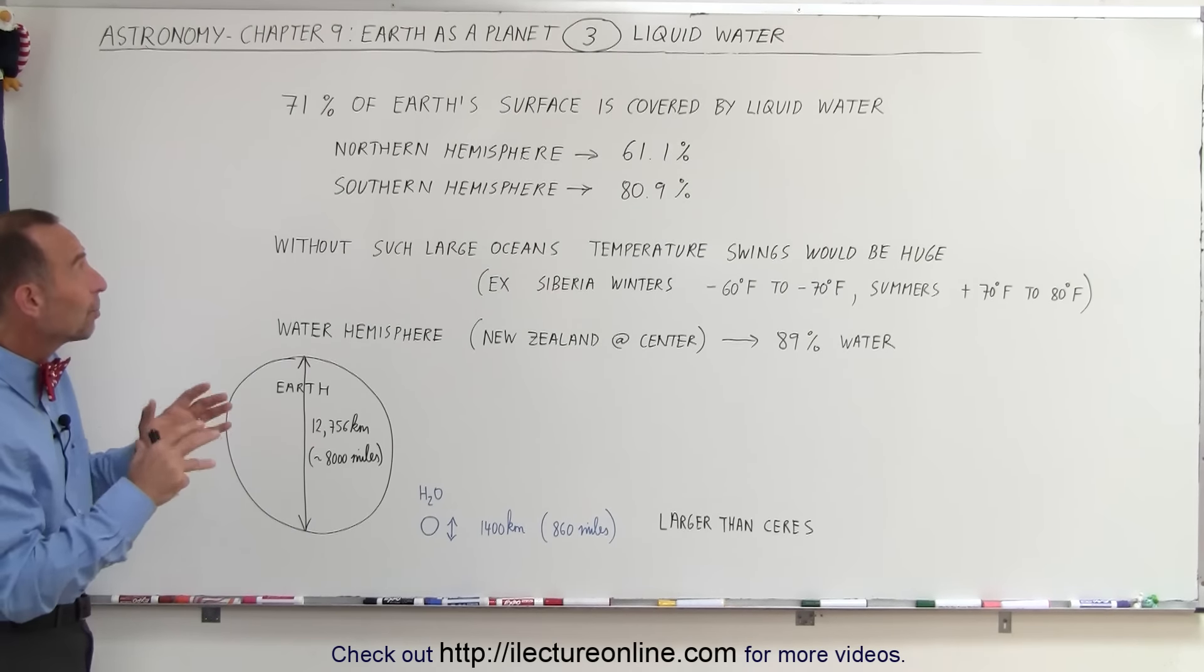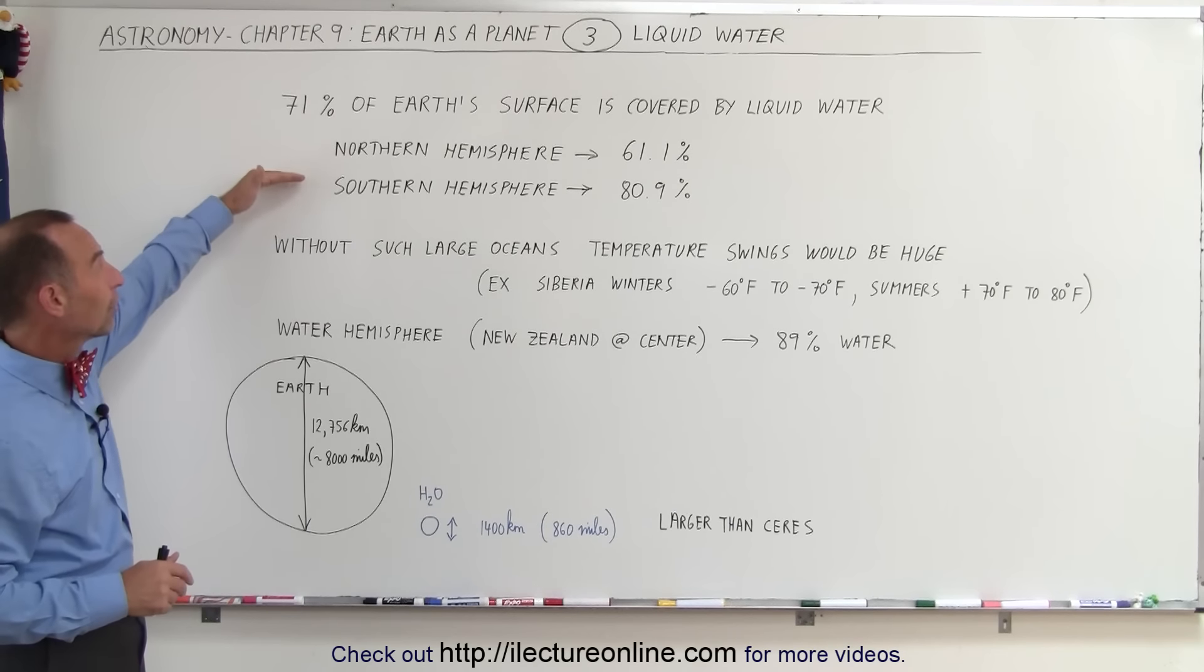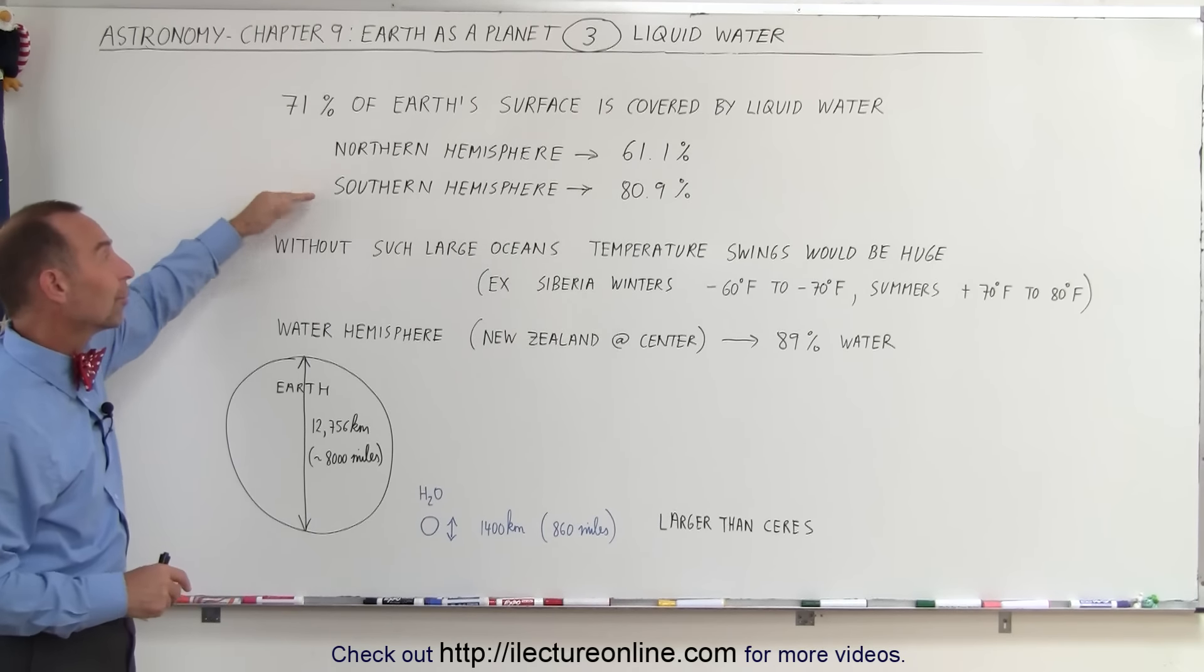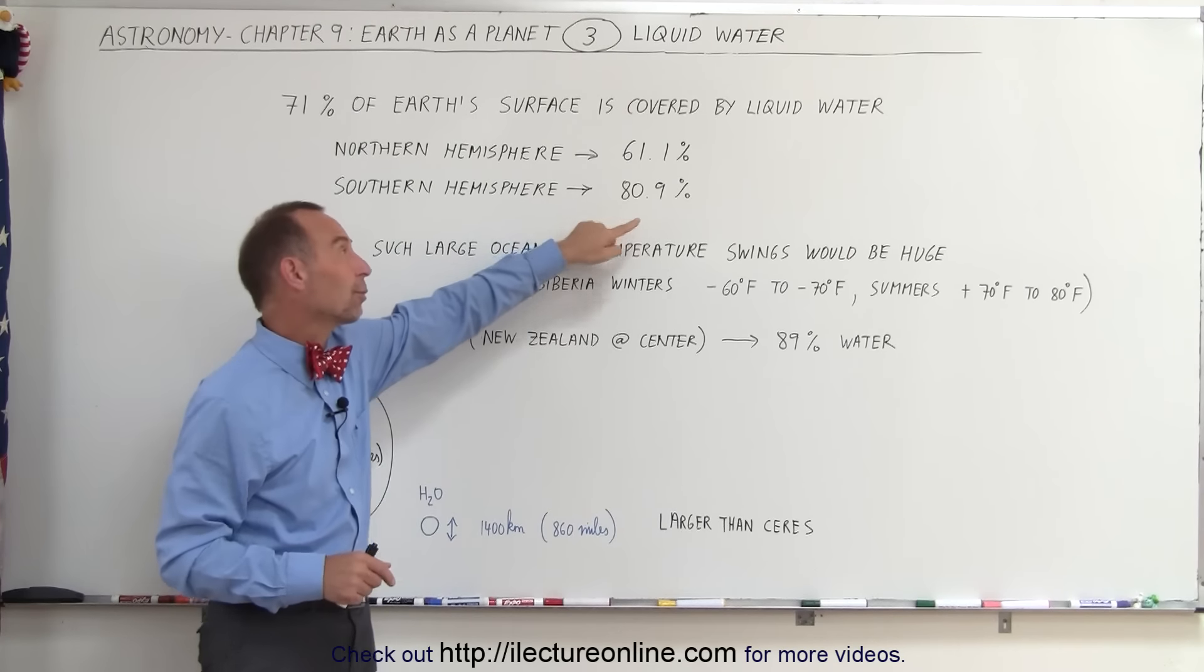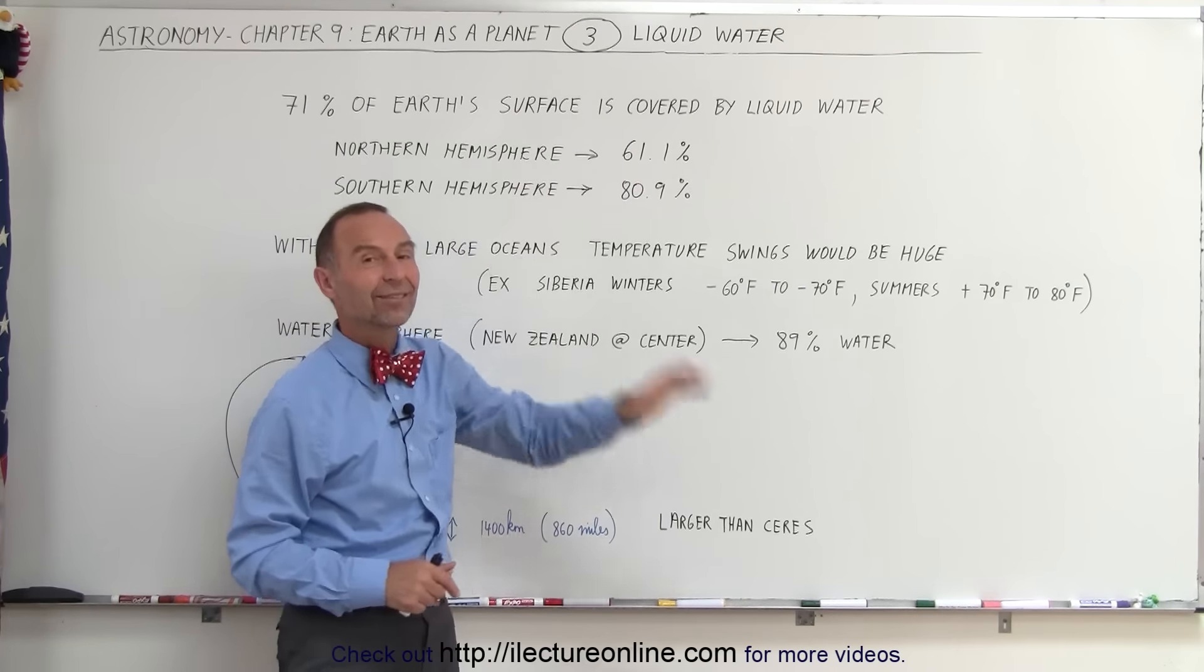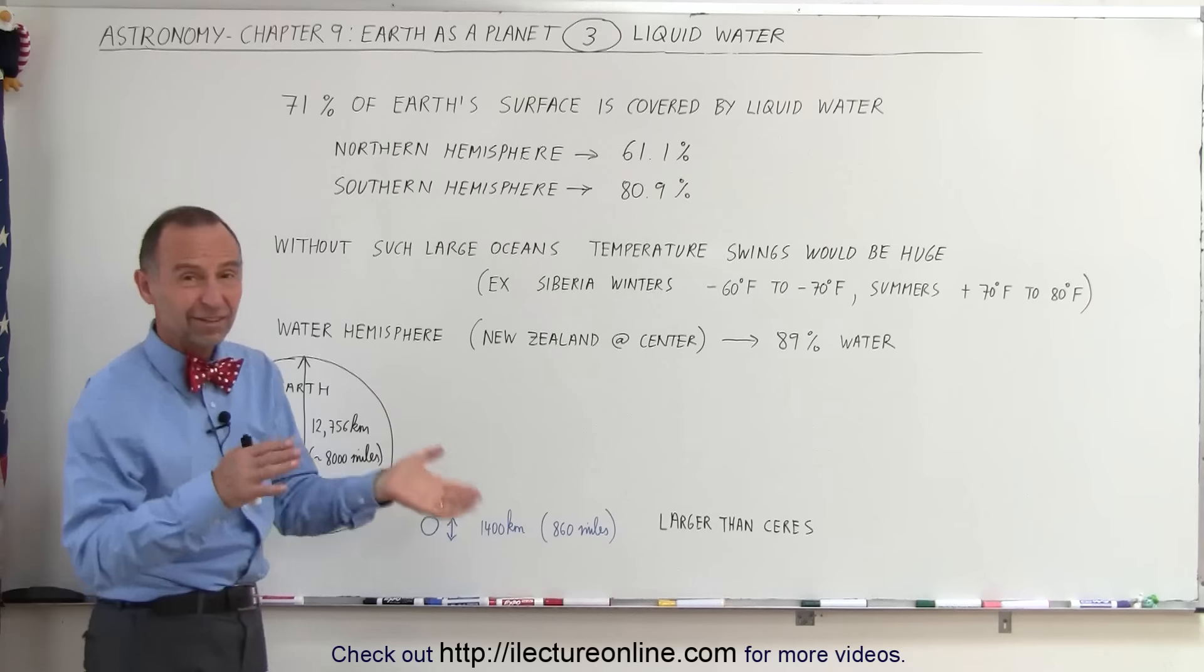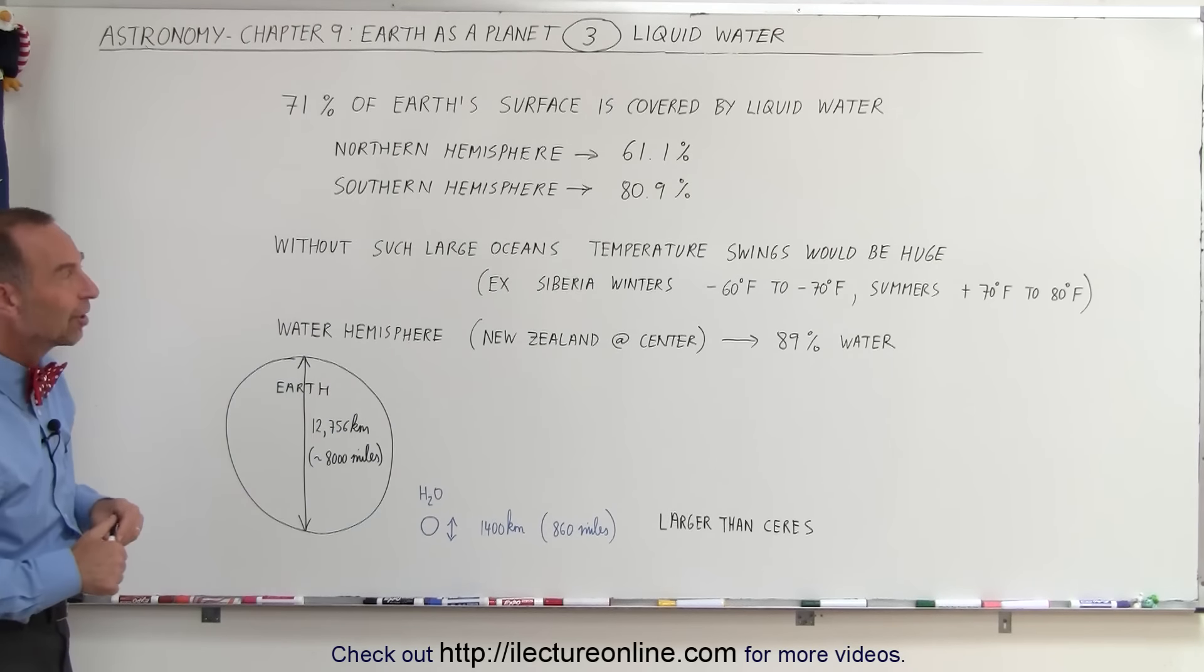If 71% of the Earth is covered by liquid water, when we compare the Northern Hemisphere to the Southern Hemisphere, we notice that the Southern Hemisphere is 80.9% covered with water as opposed to the Northern Hemisphere at 61.1%, so roughly 60% at the North and 80% at the South.